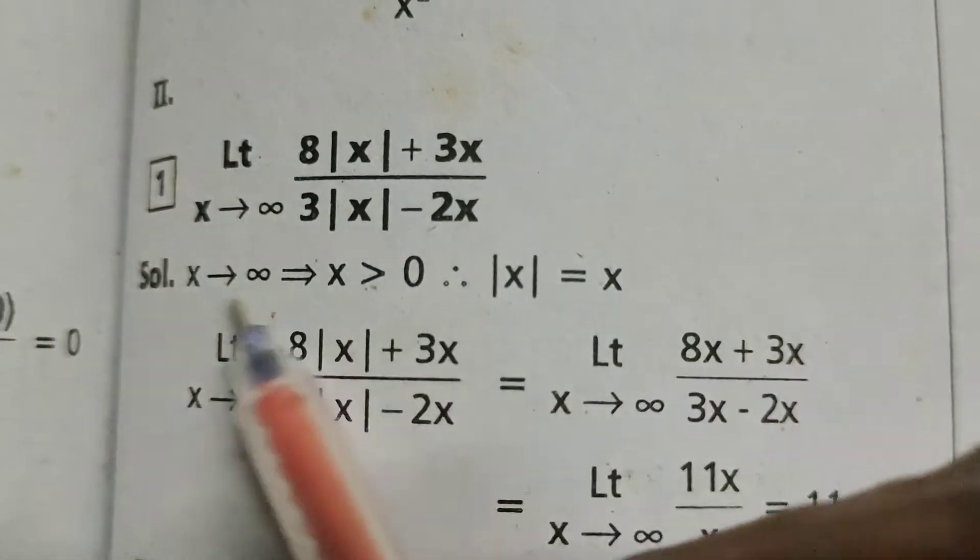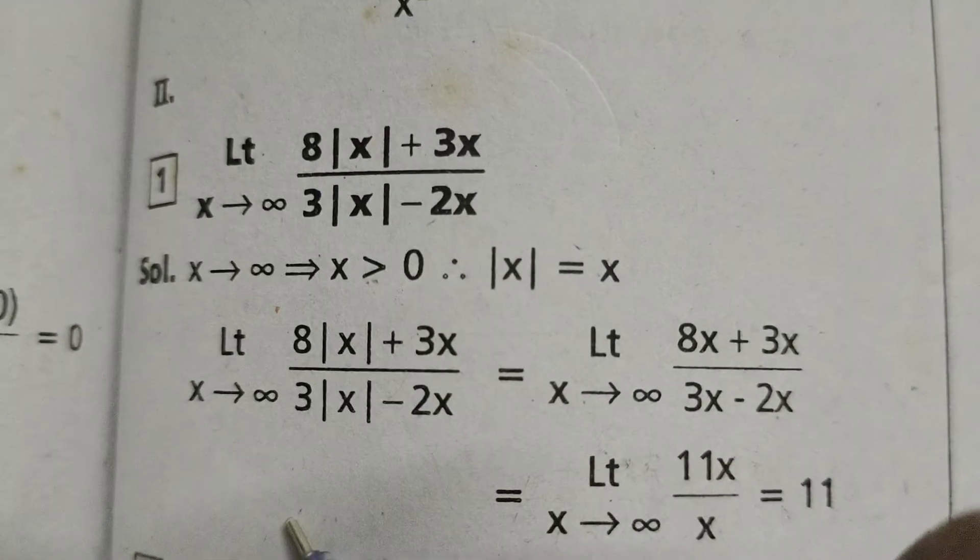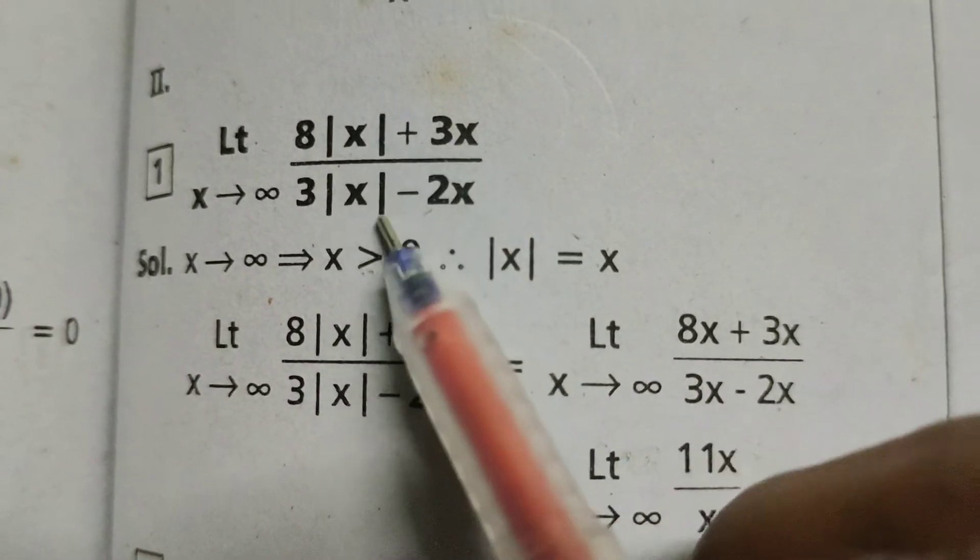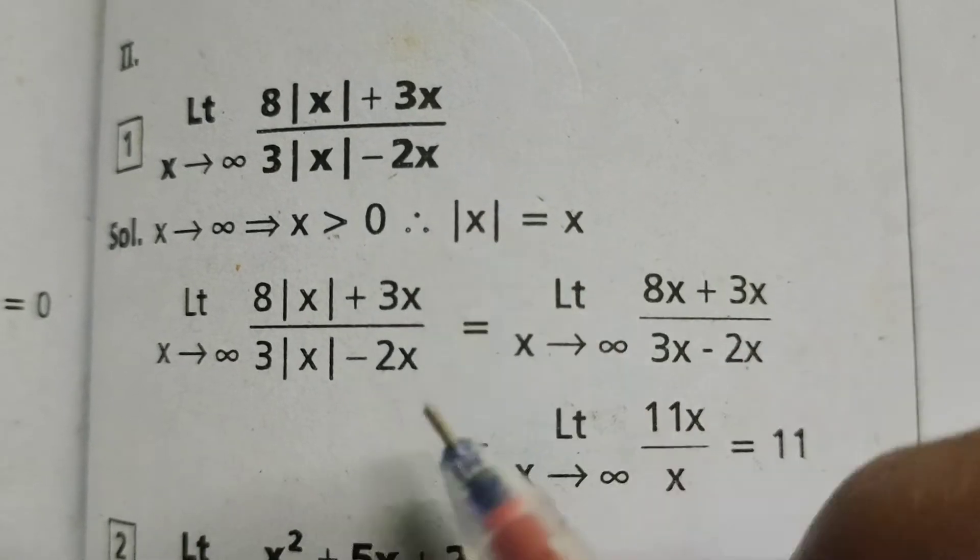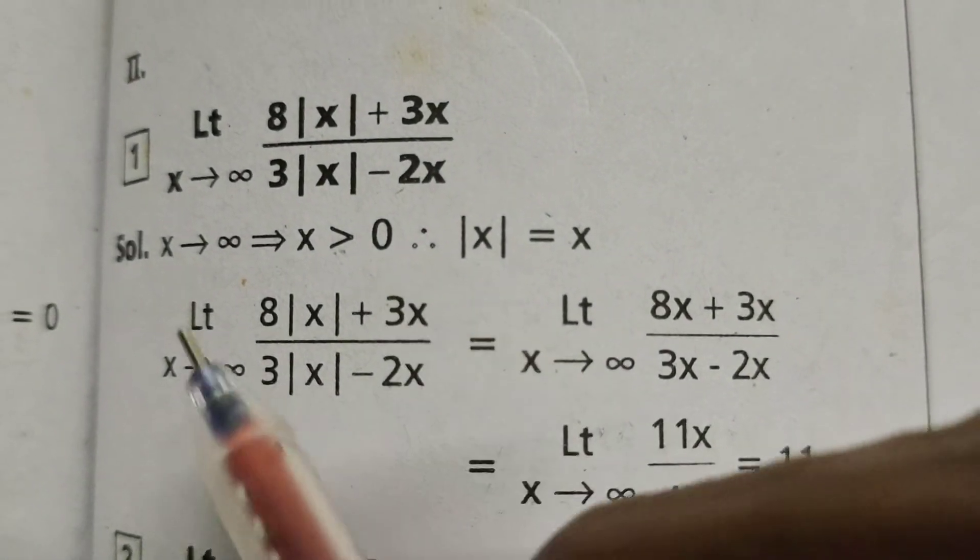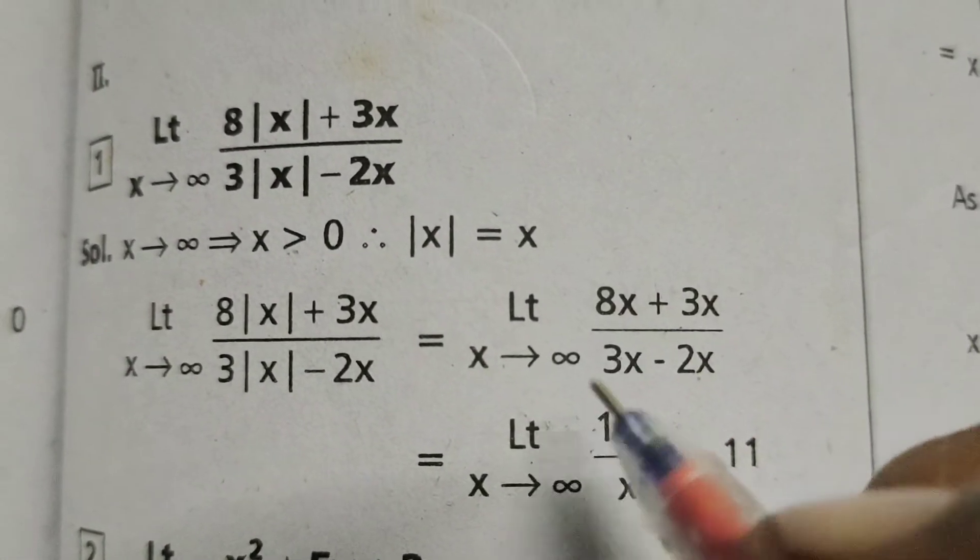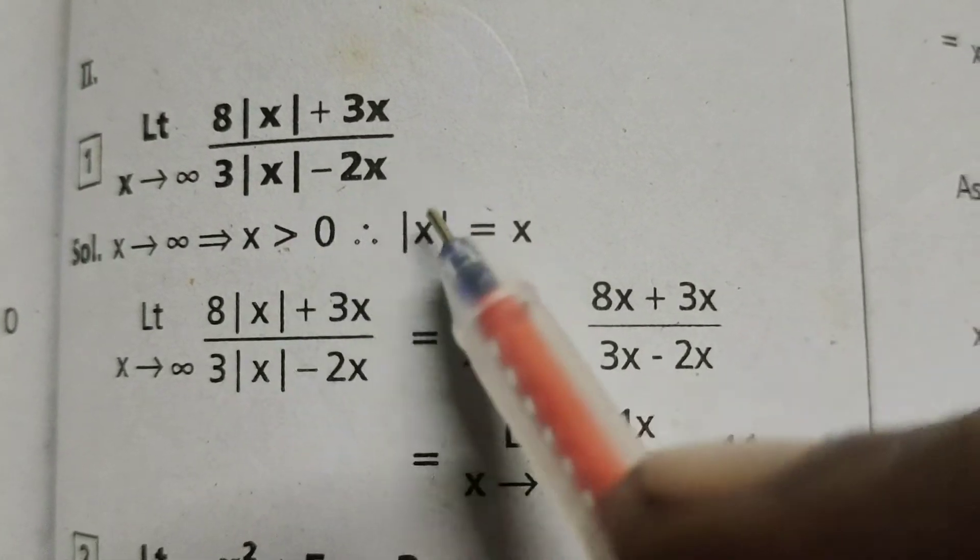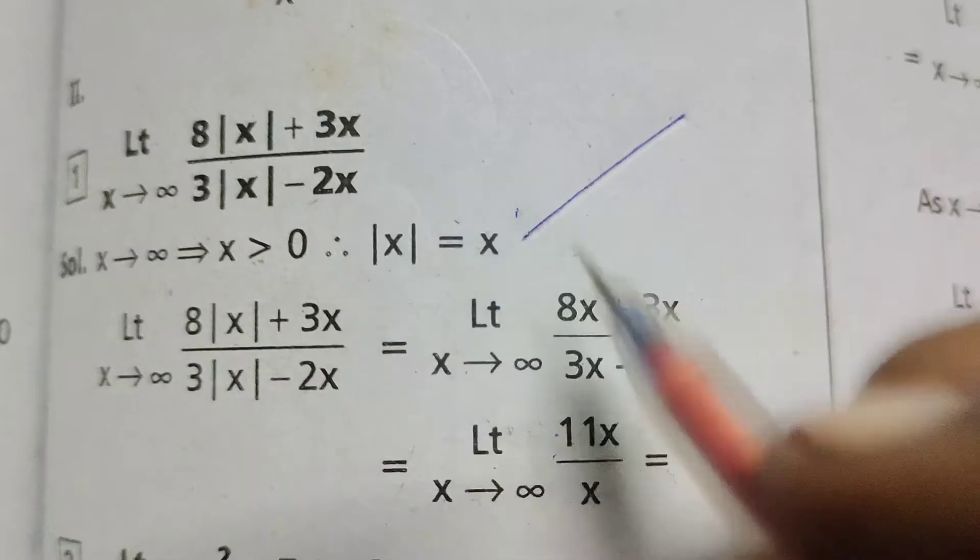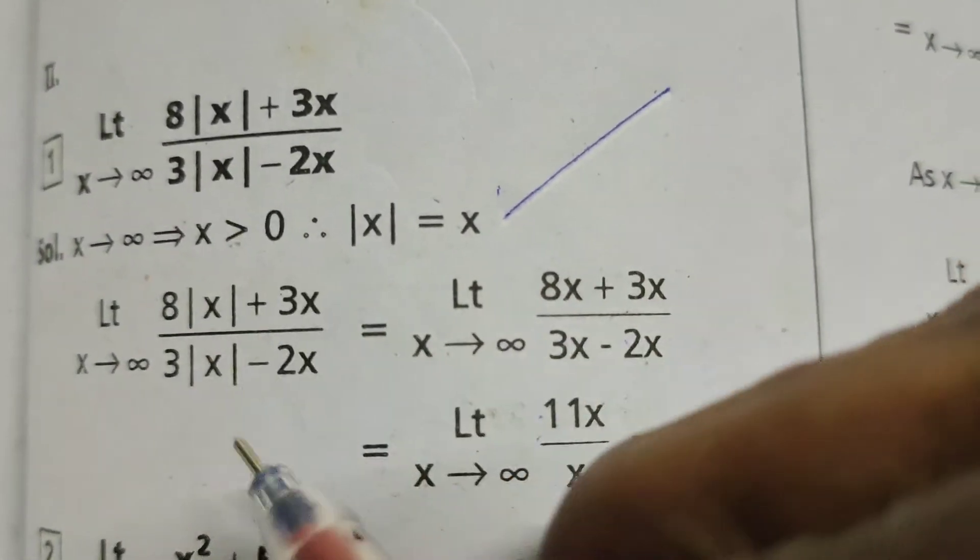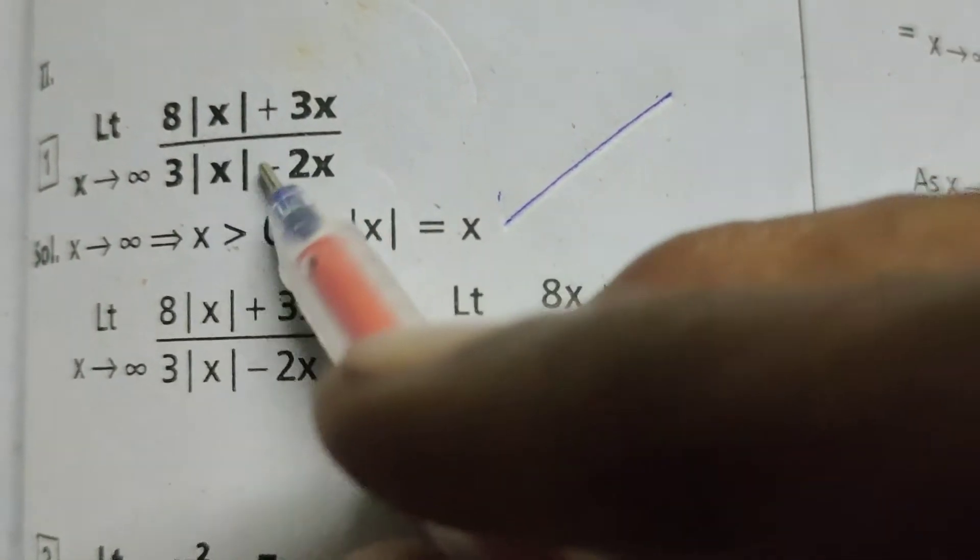Now, by the given problem, limit x tends to infinity 8 mod x plus 3x by 3 mod x minus 2x equals to limit x tends to infinity 8 into, in place of mod x, write x plus 3x by denominator 3 into, in the denominator also.